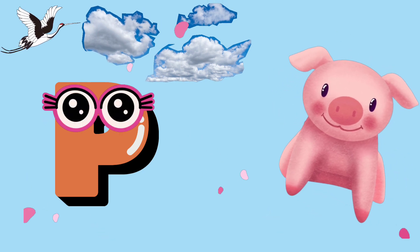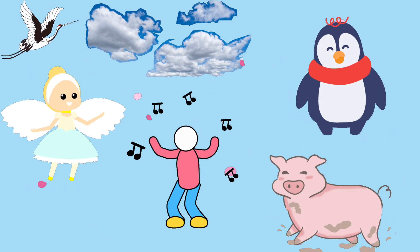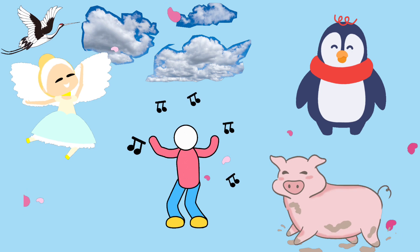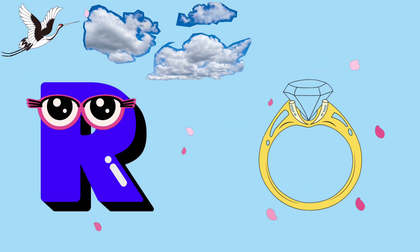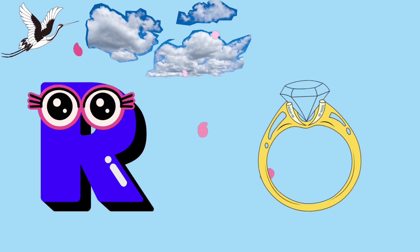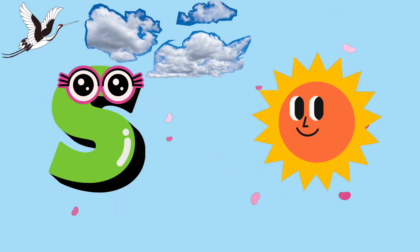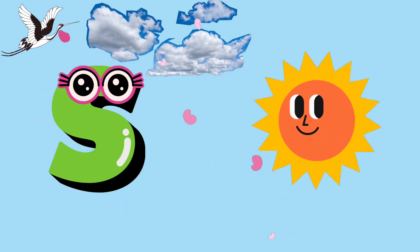P is for pig, pig. Q is for question, qu-qu-question. R is for ring, r-r-ring. S is for sun, s-s-sun.